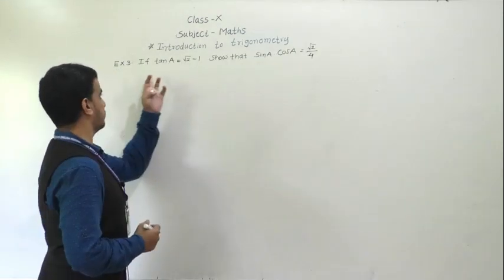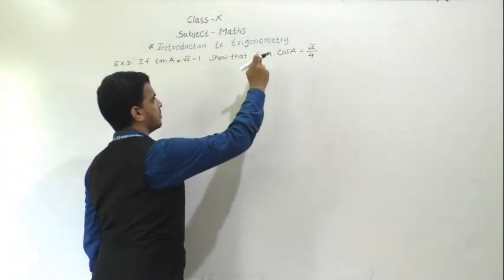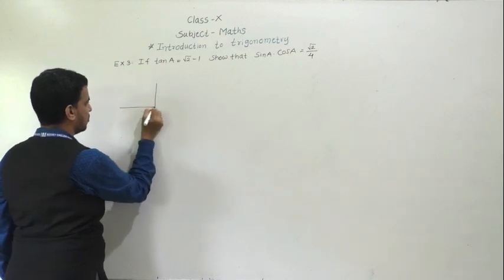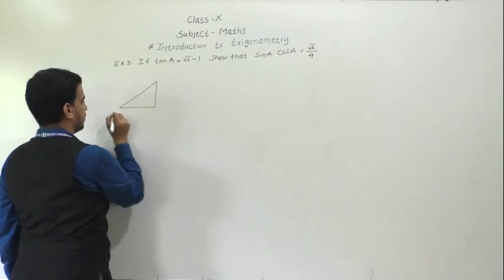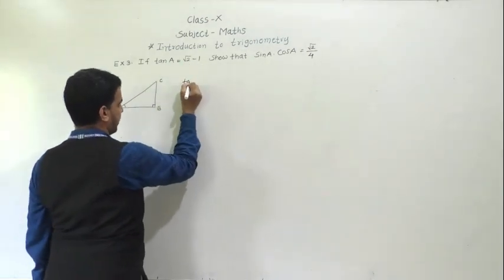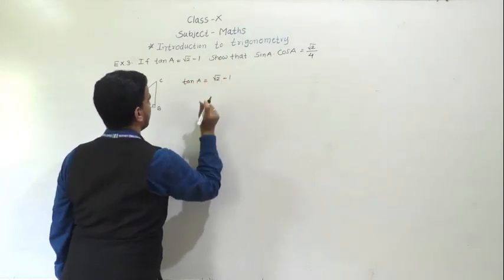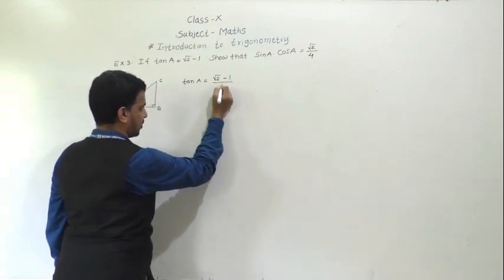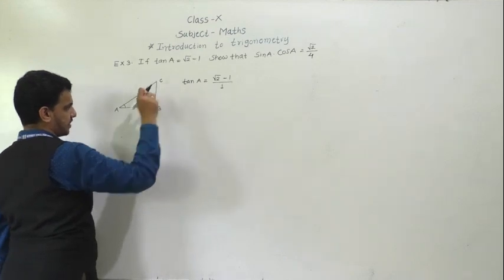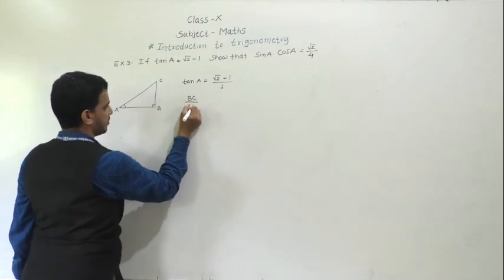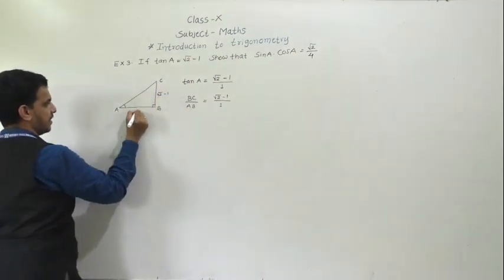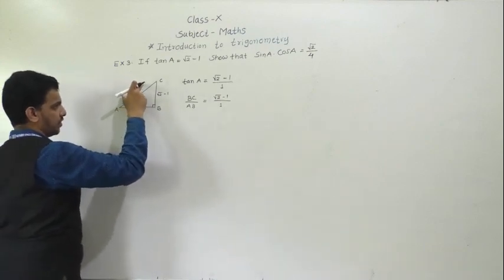Now we take the third example. If tan A equals √2 - 1, show that sin A · cos A equals √2 / 4. Same procedure: first draw a right triangle ABC with angle A. Tan A is given as √2 - 1. Since there is no denominator shown, we take the denominator as 1. So by definition, tan A equals opposite side BC upon adjacent side AB, giving BC = √2 - 1 and AB = 1. Find hypotenuse AC by Pythagoras theorem.